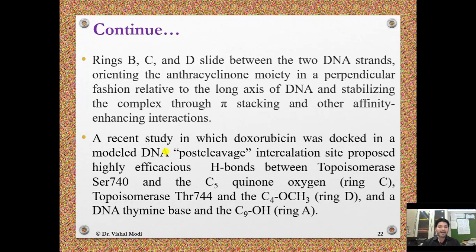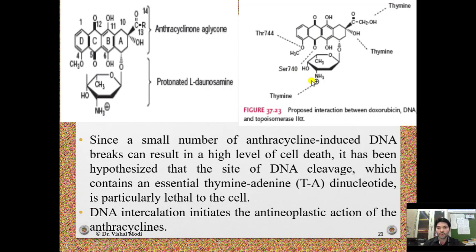A recent study docking doxorubicin in a model DNA post-cleavage intercalation site proposed highly efficacious hydrogen bonds between topoisomerase serine 740 and the C5 quinone oxygen of ring C, topoisomerase residues 309 and 744 with the C4 methoxy group of ring D, and a DNA thymine base with the C9 hydroxyl group of ring A. Topoisomerase 2 alpha residues 309 and 740 bind with ring C oxygen, forming hydrogen bonds; residues 309 and 744 form hydrogen bonds with the ring D methoxy group; and the thymine base of DNA forms a hydrogen bond with the ring A hydroxyl group.